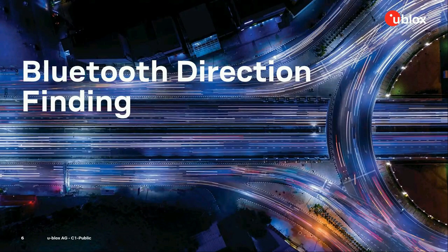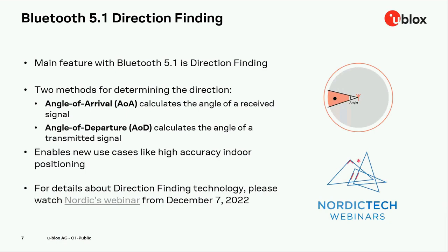Moving on to Bluetooth direction finding — the main topic of this webinar. As most of you will know, Bluetooth 5.1's main feature was Bluetooth direction finding. There are two methods for determining direction: angle of arrival and angle of departure. We will look more closely into angle of arrival because that's the technology we have selected to use for asset tracking and indoor location and positioning use cases. We can enable really high-accuracy indoor positioning, and we'll show some proof points of that during this session. If you are interested in the technology details, I strongly recommend the Nordic webinar from last week.